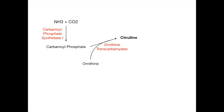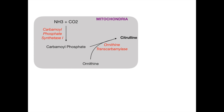We've only talked about two reactions so far, but everything here is not only occurring in the liver, but specifically it's occurring in the mitochondria — this is a very high-yield point that often shows up on exams. Everything else in the rest of the urea cycle will occur in the liver, but not in the mitochondria; rather, it will be occurring in the cytoplasm.